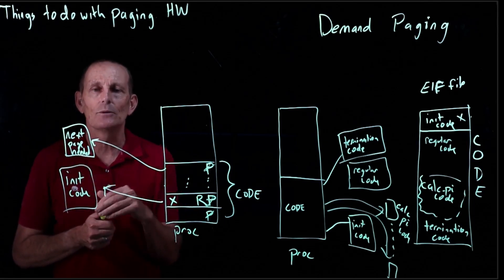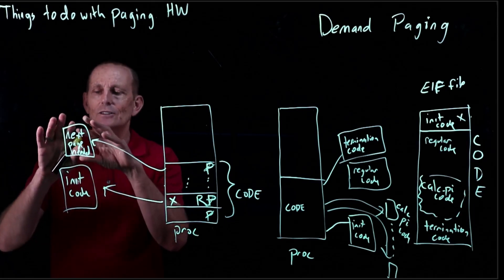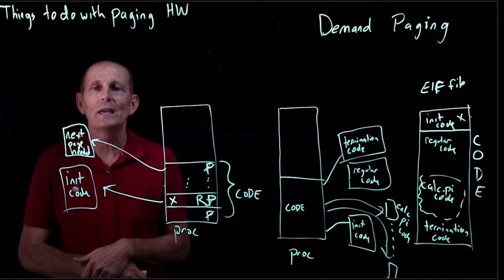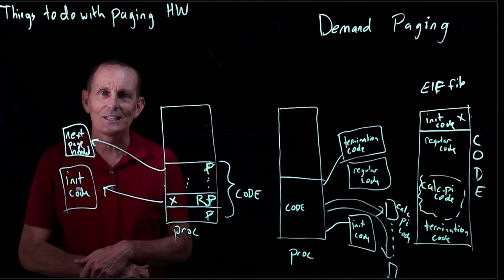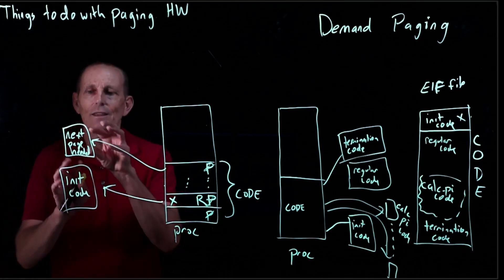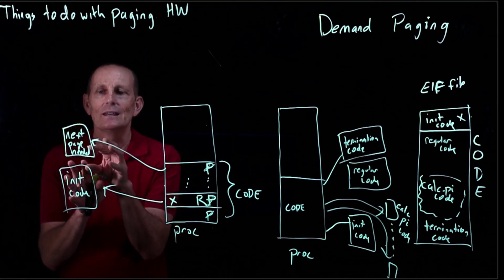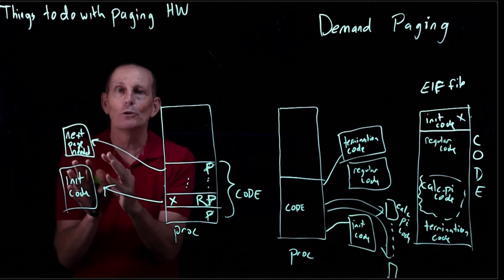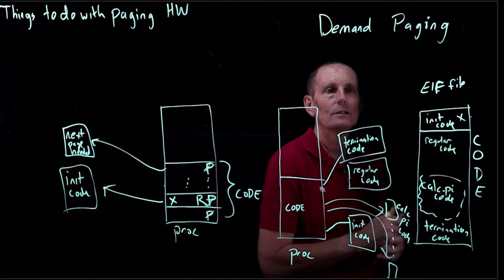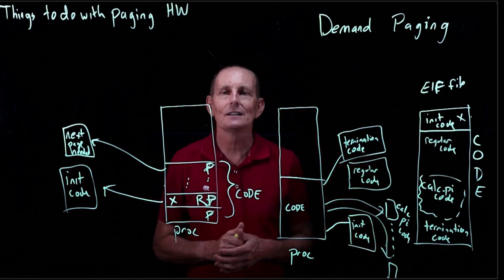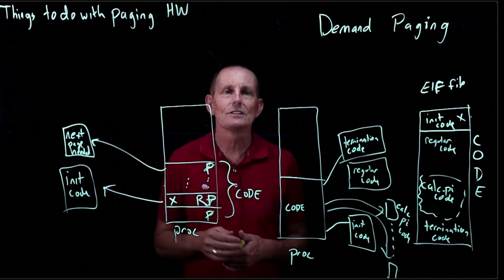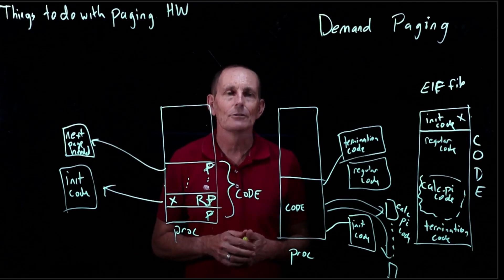So we might have a sort of what we would call a working set of pages that are the ones that are actually currently being used, and the old ones we don't care about. So in that case, what we're really looking at is the physical memory is a cache for the ELF file, for the code in the ELF file. We'll talk a lot more about this idea of getting rid of pages that haven't been used recently and reloading them when we talk about virtual memory.